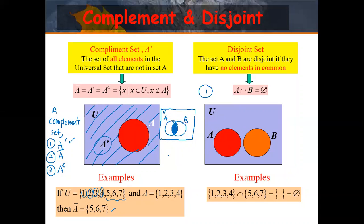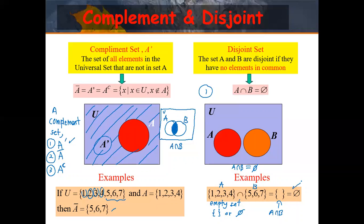For the disjoint set, for sure, A intersect B is equal to the empty set — meaning there are no elements in A intersect B. Remember, for the empty set, we have two notations: either curly brackets with nothing inside, or the slashed circle symbol. Both mean the same thing. Usually we use the circle symbol.